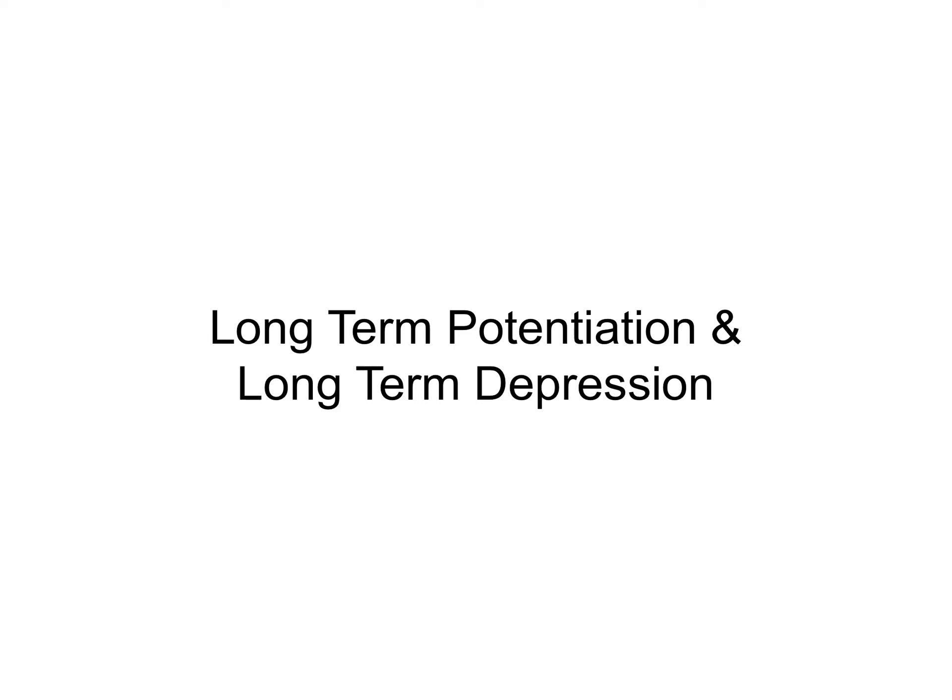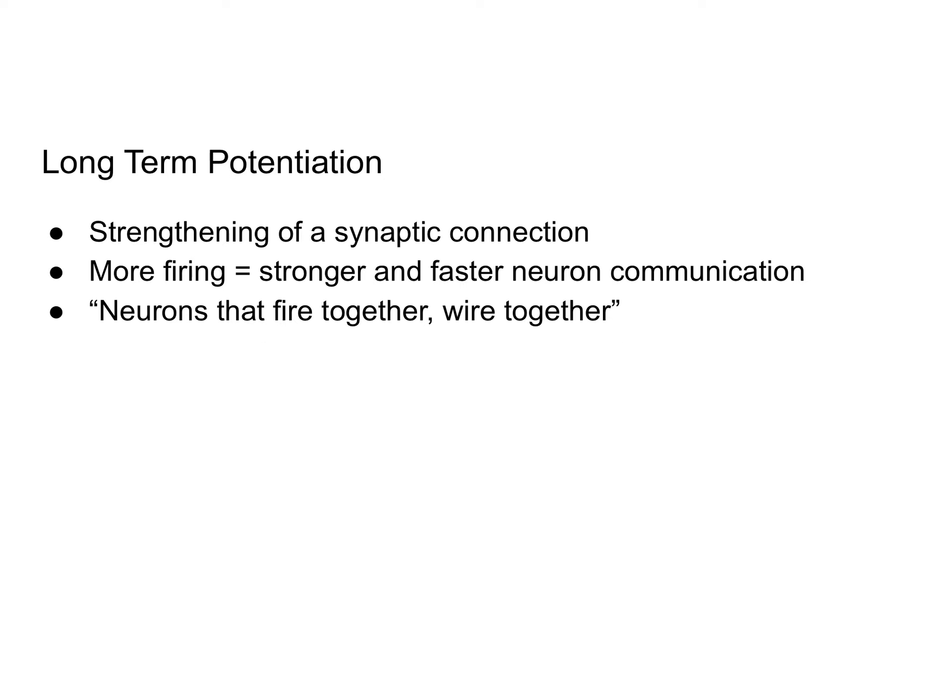Now we're going to talk about long-term potentiation and long-term depression — and this depression is not the mental illness; it refers to depression of the connections between neurons. Long-term potentiation is the strengthening of a synaptic connection. The more action potentials and communication that occur between neurons, the more likely that synapse is to be strengthened. There's a saying: neurons that fire together wire together. As this potentiation builds up, communication becomes stronger and faster.